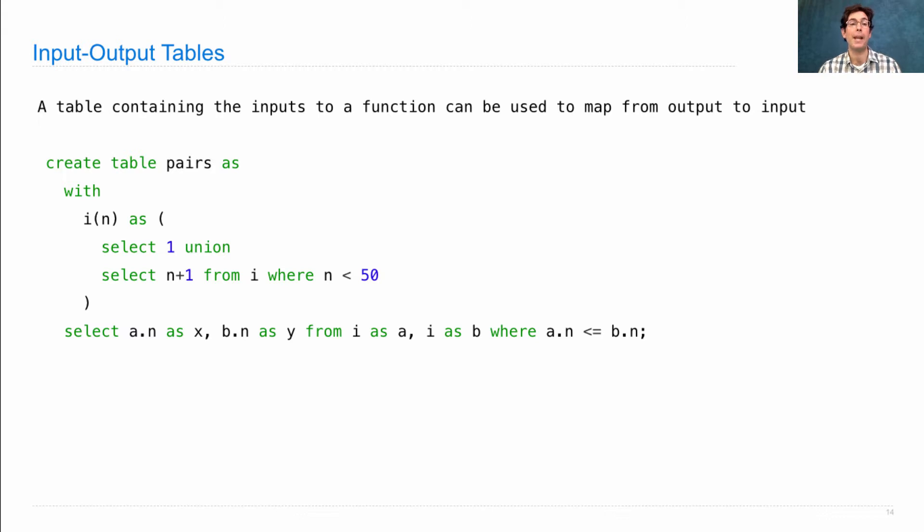So we'll first create a table of all pairs of integers from 1 to 50. How do we do that? Well, we create table pairs. We use a recursive local table to actually enumerate the different integers, which we'll store in a table called i with a column n, which includes 1, and 2, and 3, and 4, and 5, all the way up to 50.